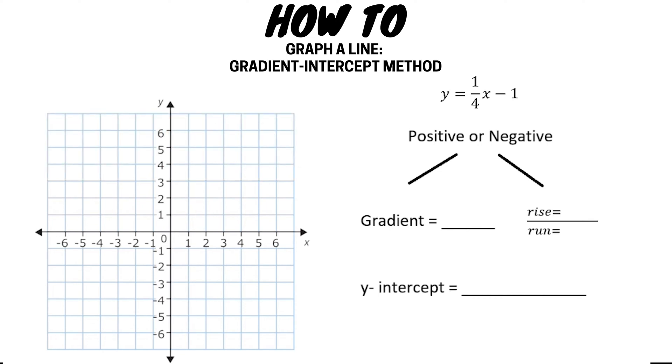So before we get straight into graphing, let's determine whether the line has a positive or a negative gradient. The way we tell this is by looking at the number in front of the x, or the coefficient of x. This number tells us the gradient of the line, so if it's a positive number then the line will have a positive slope. If it's a negative number, the line will have a negative slope. In this example the gradient is positive, so we now know what direction our line will be going.